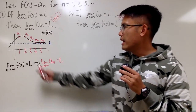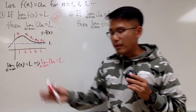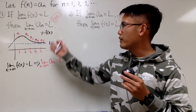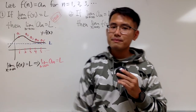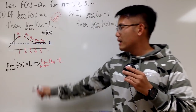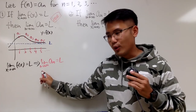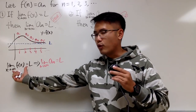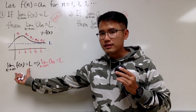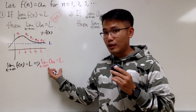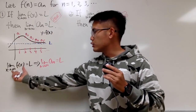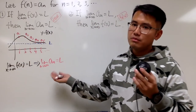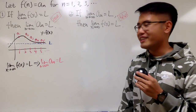The idea is that x can be any real number, as long as it's in the domain of the function, while n is just positive whole numbers. So the function limit is a stronger statement and the sequence limit is a weaker statement. A stronger statement implies the weaker statement — that's pretty much it.